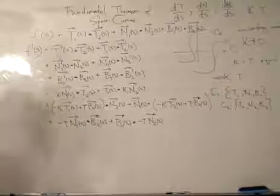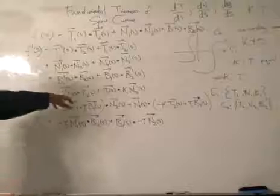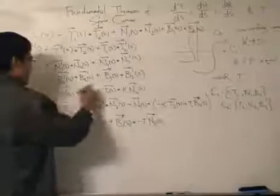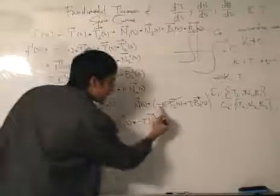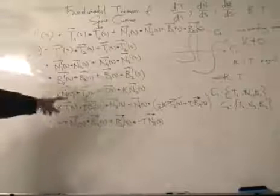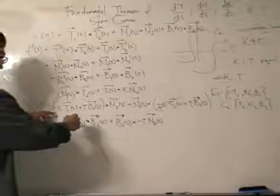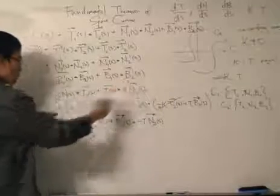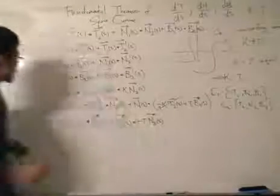Let's neaten the algebra step by step. We have n1 dotted with n2 — note that they commutate. Now n1 dots with minus kappa t2, which cancels out the corresponding term due to the minus sign. Then t1 dot with kappa n2: using commutativity, we can bring kappa over, giving plus kappa t1·n2 minus kappa t1·n2, which likewise cancels.